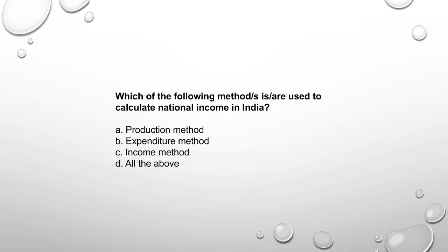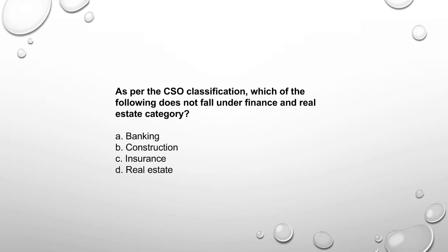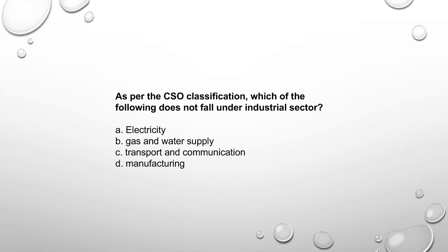Which of the following methods is used to calculate national income in India? The national income estimation is the responsibility of the CSO — Central Statistical Office — option B. As per the CSO classification, which of the following does not fall under the finance and real estate category? Banking, finance, construction, and insurance are listed; construction does not fall under finance and real estate.